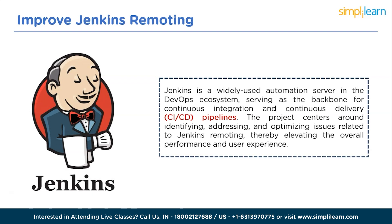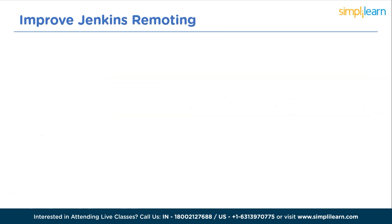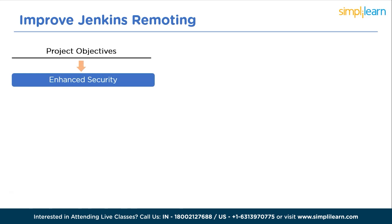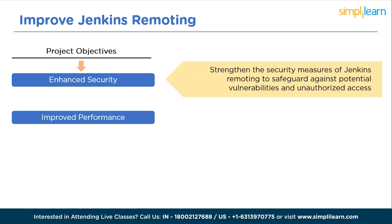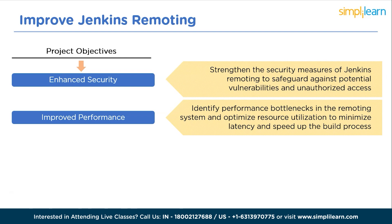Now coming to the project objectives — what this project needs to accomplish. The first is to enhance security: strengthen the security measures of Jenkins remoting to safeguard against potential vulnerabilities and unauthorized access, implementing secure communication protocols and authentication mechanisms for better data protection. The next objective is improved performance: identify performance bottlenecks in the remoting system and optimize resource utilization to minimize latency and speed up the build process.